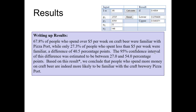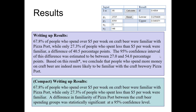Here's how we might write up the result: 67.8% of people who spend over five dollars per week on craft beer were familiar with Pizza Port, while only 27.3% of those who spent less than five dollars per week were familiar — a difference of 40.5 percentage points. The 95% confidence interval of this difference was estimated to be between 27 and 54 percentage points. Based on this result, we conclude that people who spend more money on craft beer are indeed more likely to be familiar with Pizza Port. A more compact version simply states both percentages and notes the difference was statistically significant at a 95% confidence level.